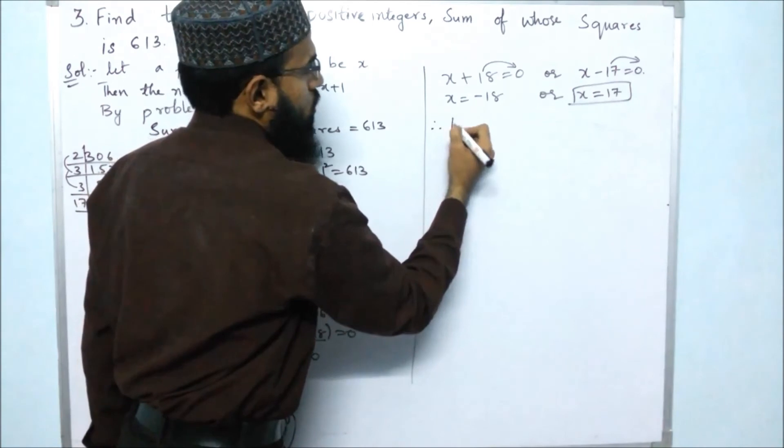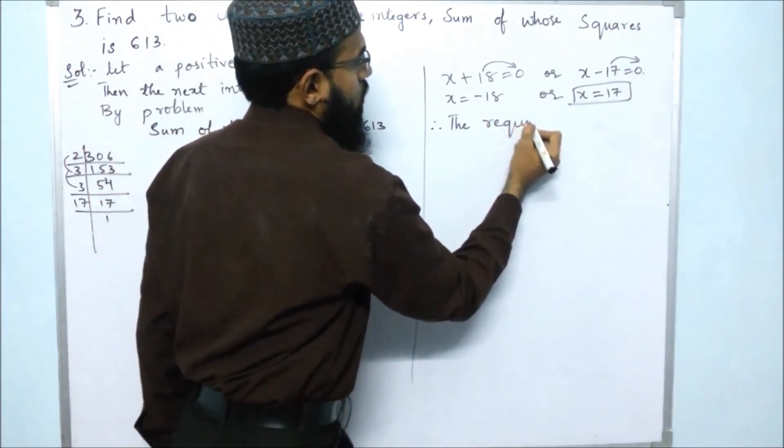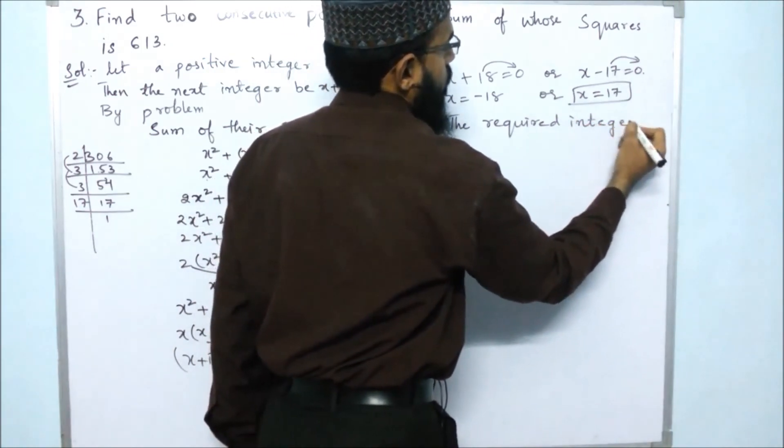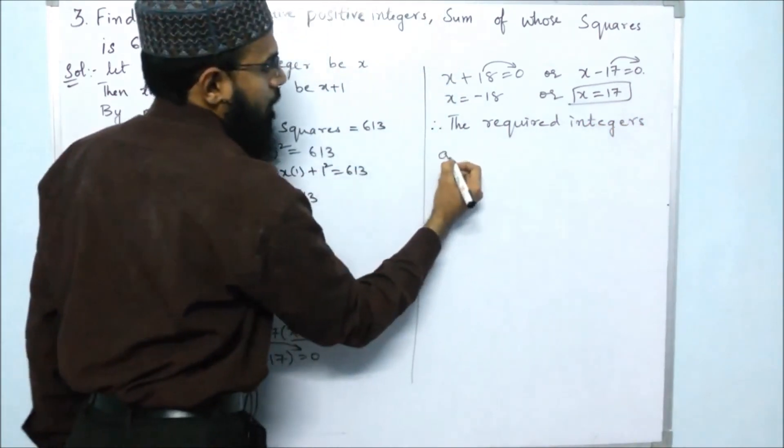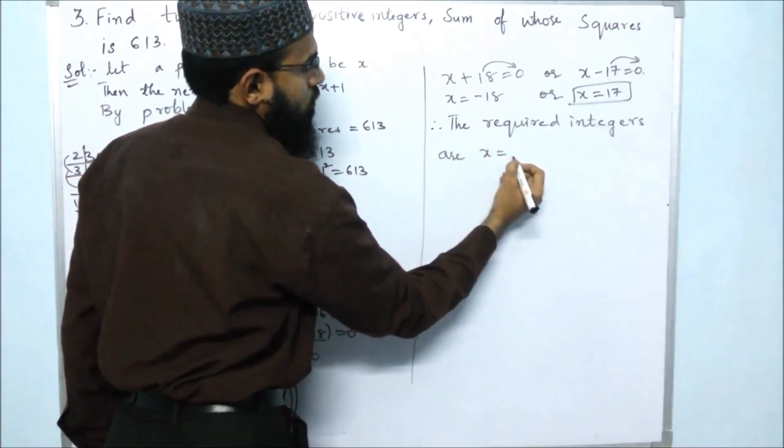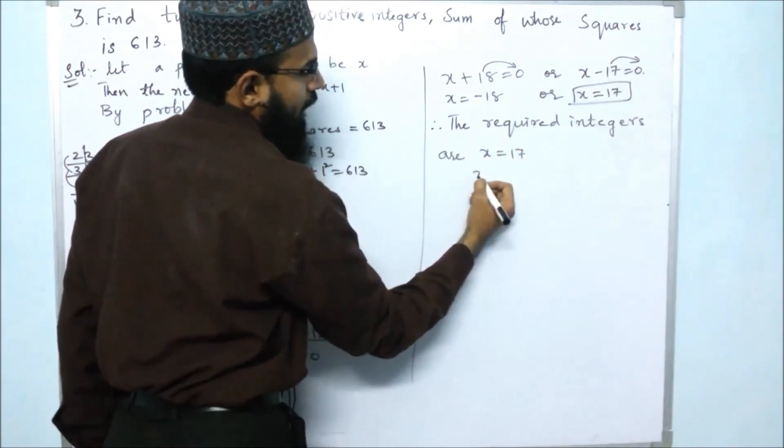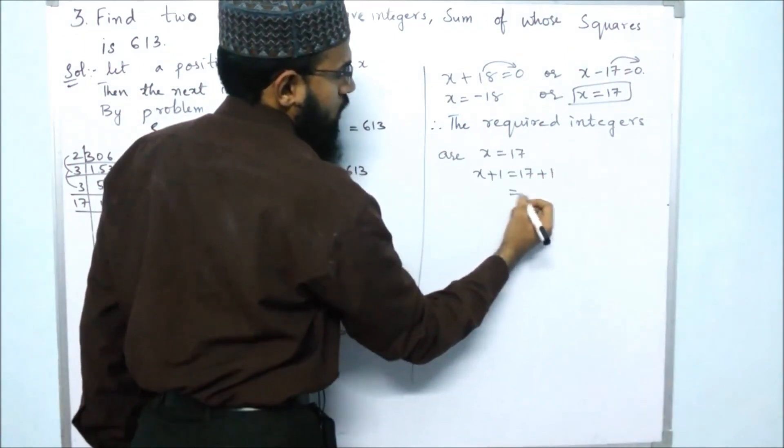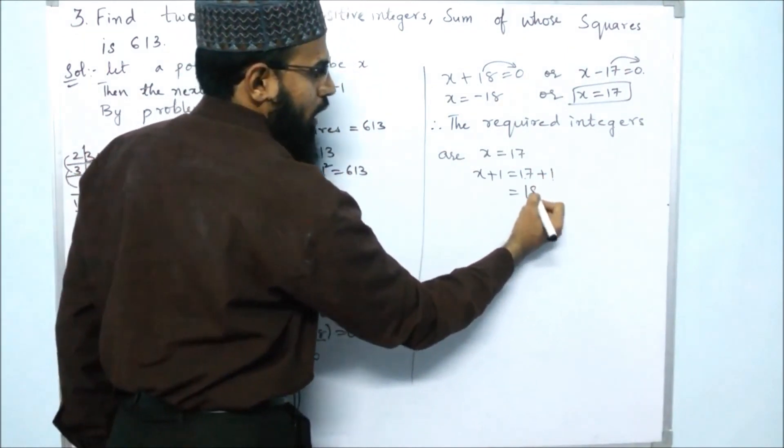Therefore the required integers are x = 17 and the next integer is x + 1, that is 17 + 1. So 17 + 1 is 18.